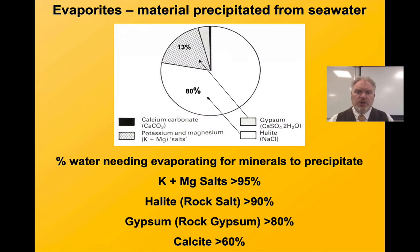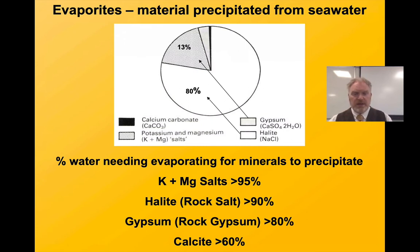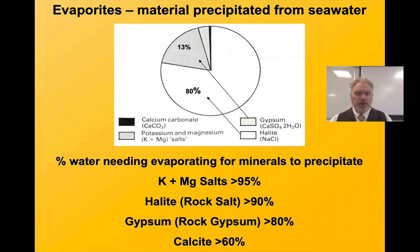So any minerals dissolved within the lake will be left behind. We see a sequence of deposition depending on how much water needs to evaporate for minerals to actually precipitate, which is related to their solubility. Carbonate minerals like calcite will be the first to precipitate — perhaps with only 60% of the lake water evaporating. Sulphate minerals like gypsum need more than 80% to be evaporated. The halide minerals, like halite, need more than 90% to go, because halite is more soluble than gypsum.